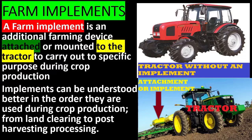Farm implements. A farm implement is an additional farming device attached or mounted to the tractor to carry out a specific purpose during crop production. Implements can be understood better in the order they are used during crop production, from land clearing to post-harvest processing.